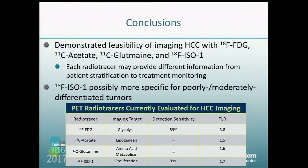In conclusion, we demonstrated the feasibility of imaging HCC with PET radiotracers — two known ones, carbon-11 acetate and FDG, and two unknown ones, glutamine and F18-ISO1. Each radiotracer may provide different information about the isoform of the tumor, but F18-ISO1 seems more specific for poorly and moderately differentiated tumors, with detection sensitivity similar to FDG. FDG of the four radiotracers tested was the best when it comes to tumor-to-liver ratio.